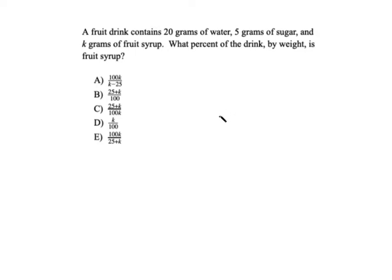So we can use a classic trick on this problem because there are variables in the question, right there, we got k, and variables in all of the answer options. And when that's the case, we can just make up our own numbers.